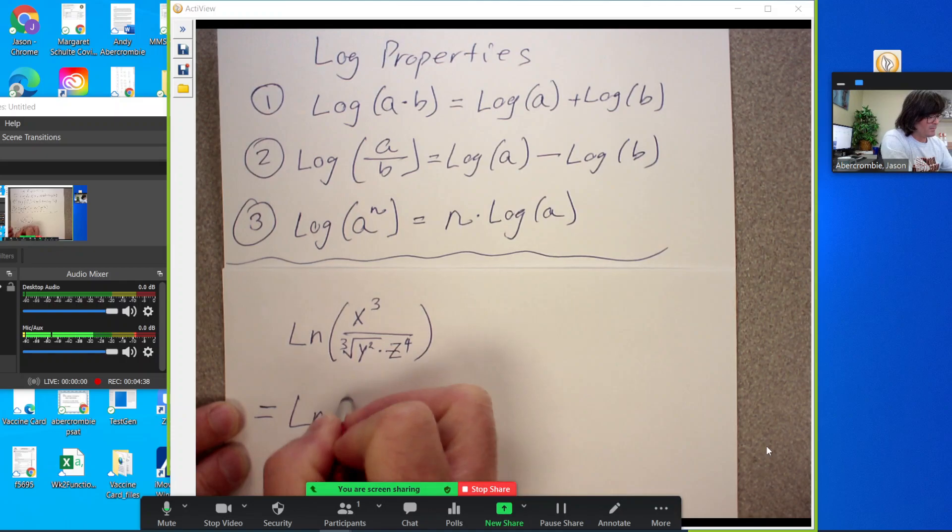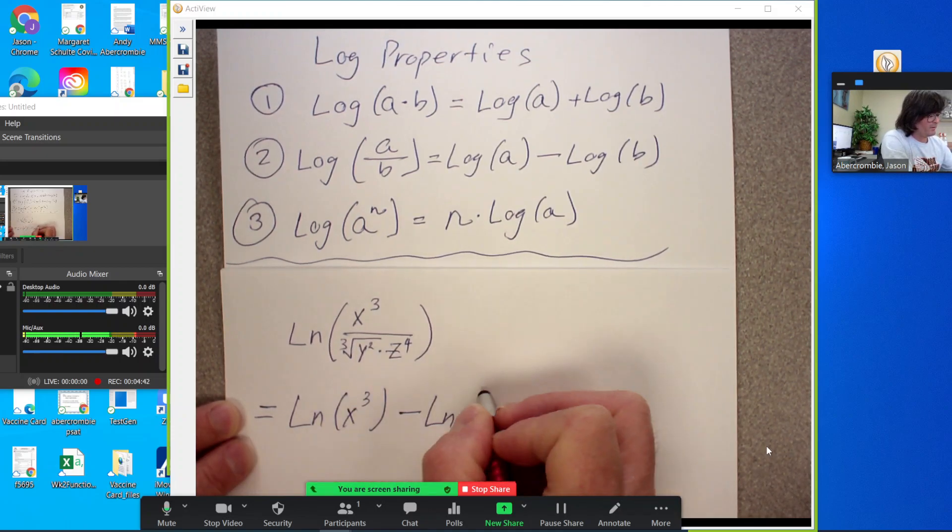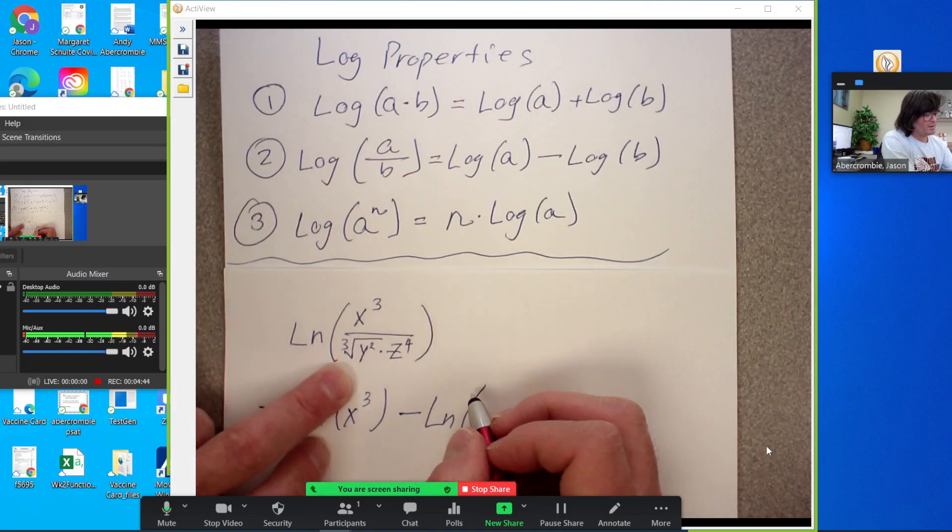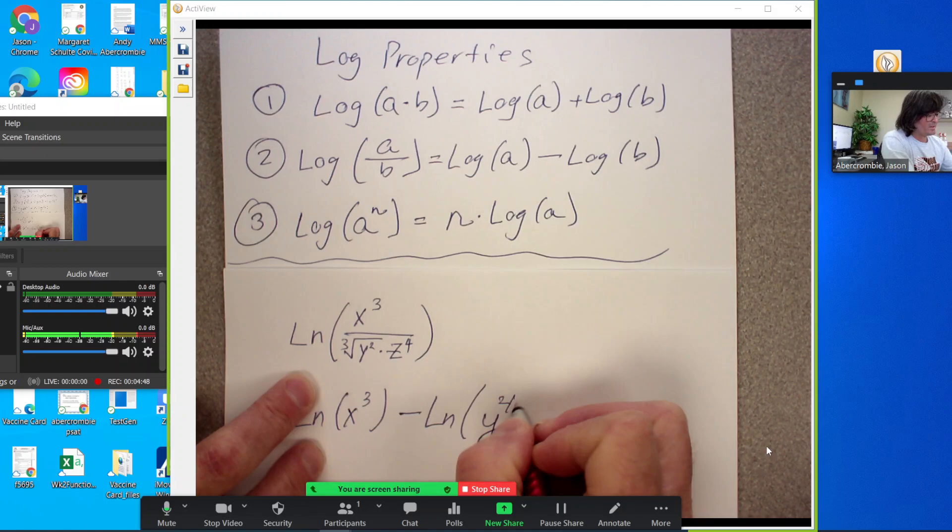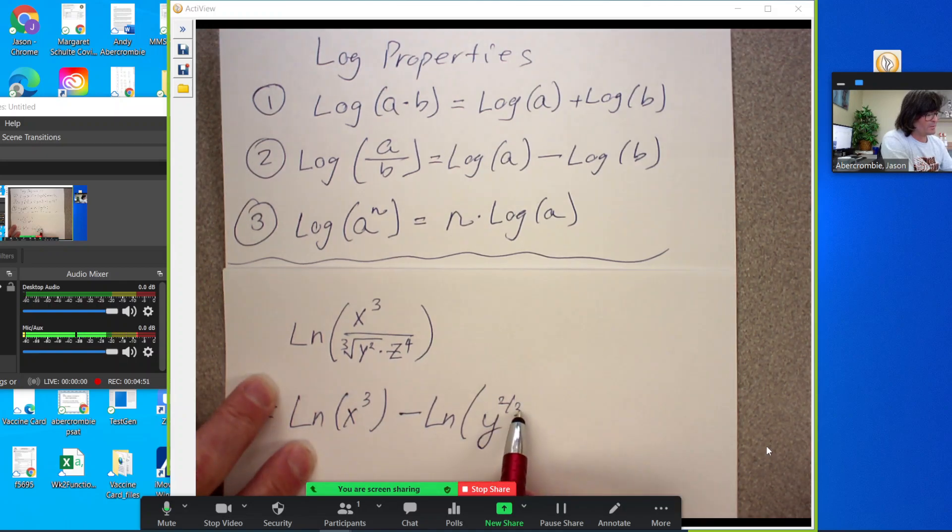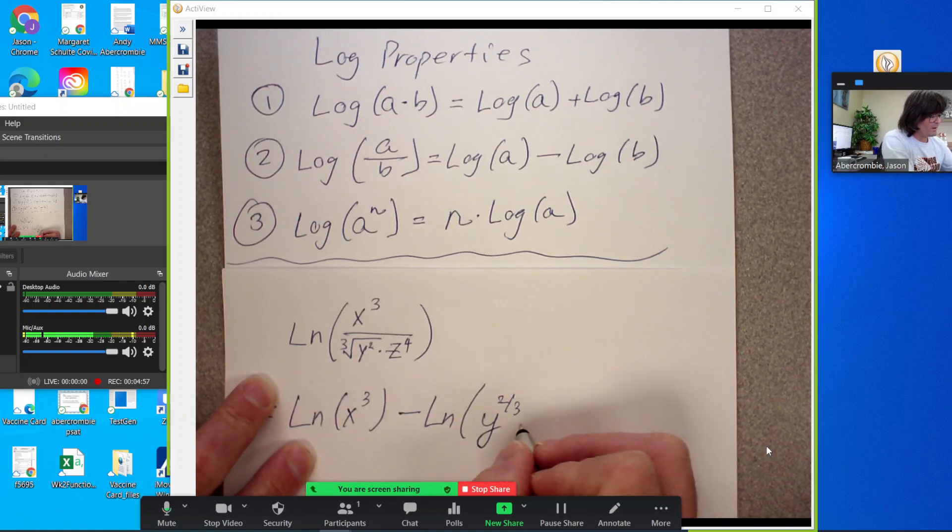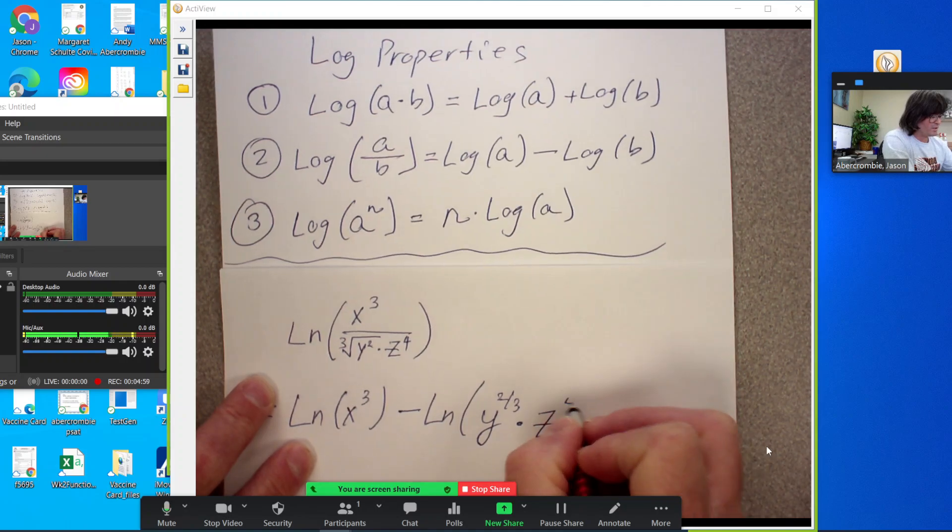The fraction is going to turn into subtraction because log of something over something can turn into subtraction. This is going to be natural log of x cubed minus natural log of this y, cube root of y to the second. I'm going to write that as two thirds because the top number is the power. The bottom number is the root when you have an exponent that's a fraction. So y squared under a cube root is y to the two thirds. And then we still have z to the fourth just kind of chilling there.